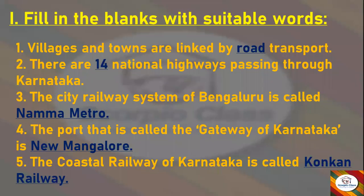Let's get started with the first section: Fill in the Blanks. First: Villages and towns are linked by — Road transport. Next: There are — 14 — national highways passing through Karnataka. Next: The city railway system of Bengaluru is called — Namma Metro. Next: The port that is called the Gateway of Karnataka is — New Mangalore. Next: The coastal railway of Karnataka is called — Konkan Railway.